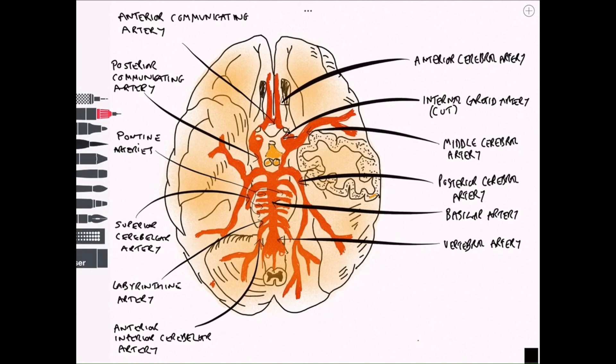So that just leaves us to label this one which is the posterior inferior cerebellar artery, the PICA as it's often called, and then the last one here is the anterior spinal artery forming off of the vertebral artery and running down the anterior part of the spinal cord.